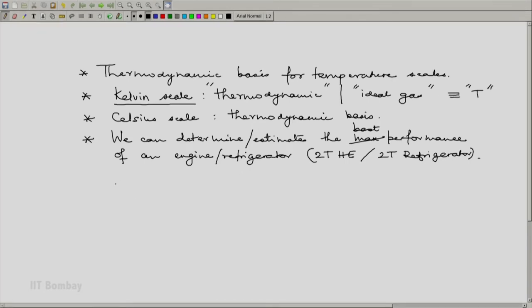For example, we know that for a 2T heat engine, the efficiency will be less than or at most equal to in the reversible limit, but in real life this equal will hardly ever be applicable, the maximum efficiency which is given by 1 minus q2 by q1, which equals 1 minus T2 by T1, where T2 and T1 are thermodynamic temperatures on the Kelvin scale. So if we know the temperatures between which our engine works, we have an estimate for the maximum efficiency and we know that the real life efficiency is going to be less than that.